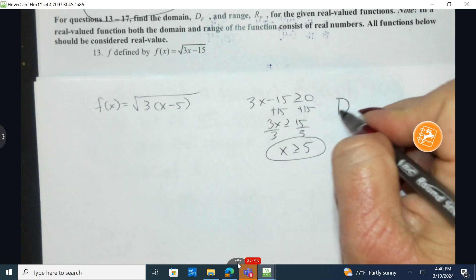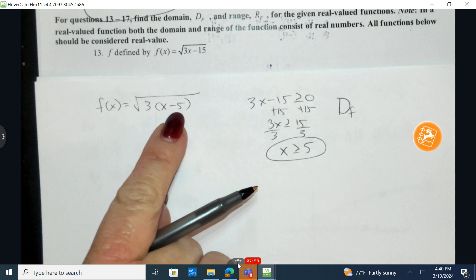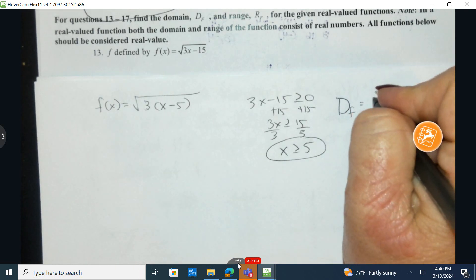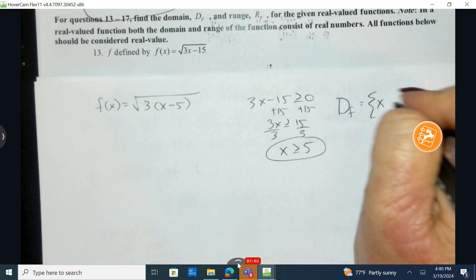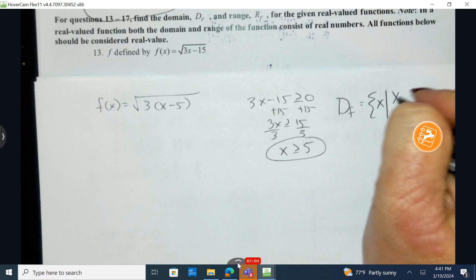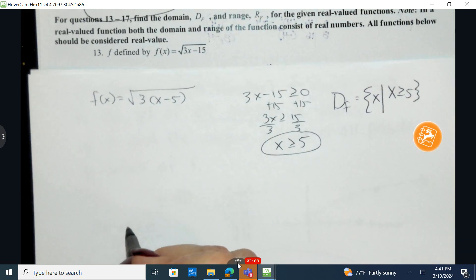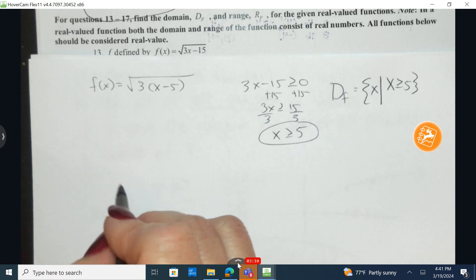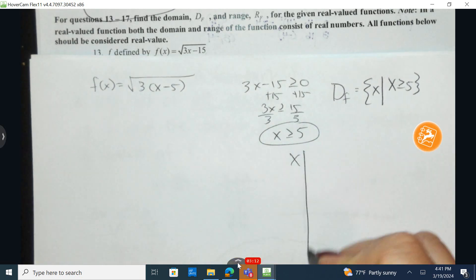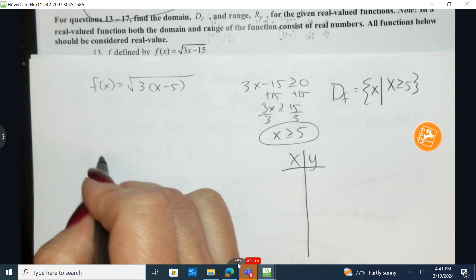I can say the domain of function f is equal to all x such that x is greater than or equal to five. Now I think it's going to be helpful for us to see the outputs here. So let's go ahead and make a very simple table knowing that we don't have a calculator right now to use.